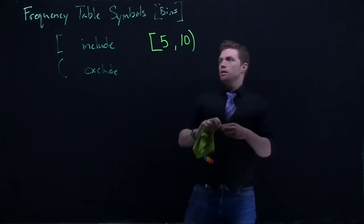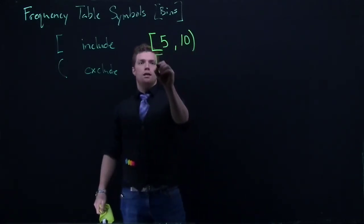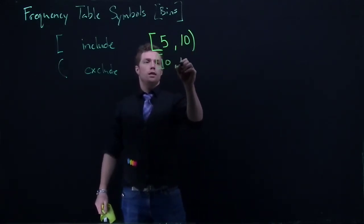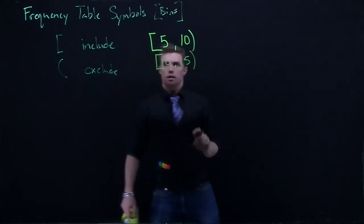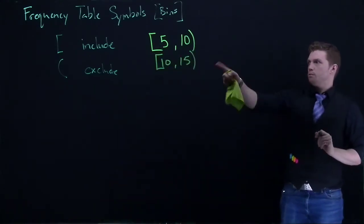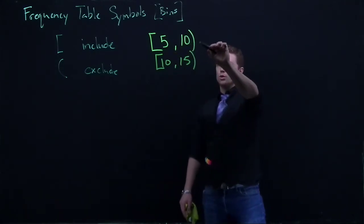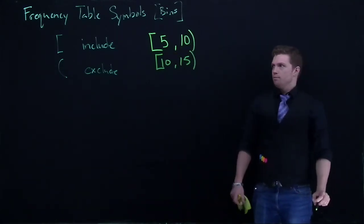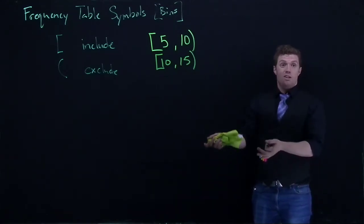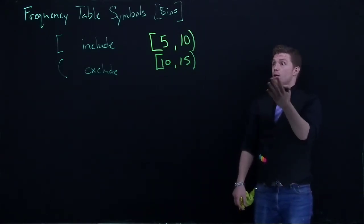Ten we wouldn't count because ten would be included in the next bin. So, oftentimes you'll see this like this. So, we are going to include the lower end and we're going to exclude the upper end. So, if you can just remember include and exclude, you can basically make all sorts of combinations of these.